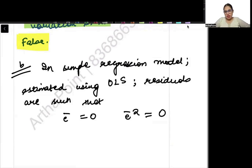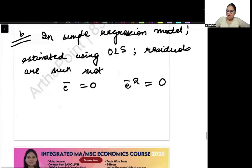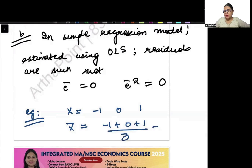Now let me show you an example. If X takes the value minus 1, 0, and 1, what is the mean of X? Minus 1 plus 0 plus 1 divided by 3, that means 0.